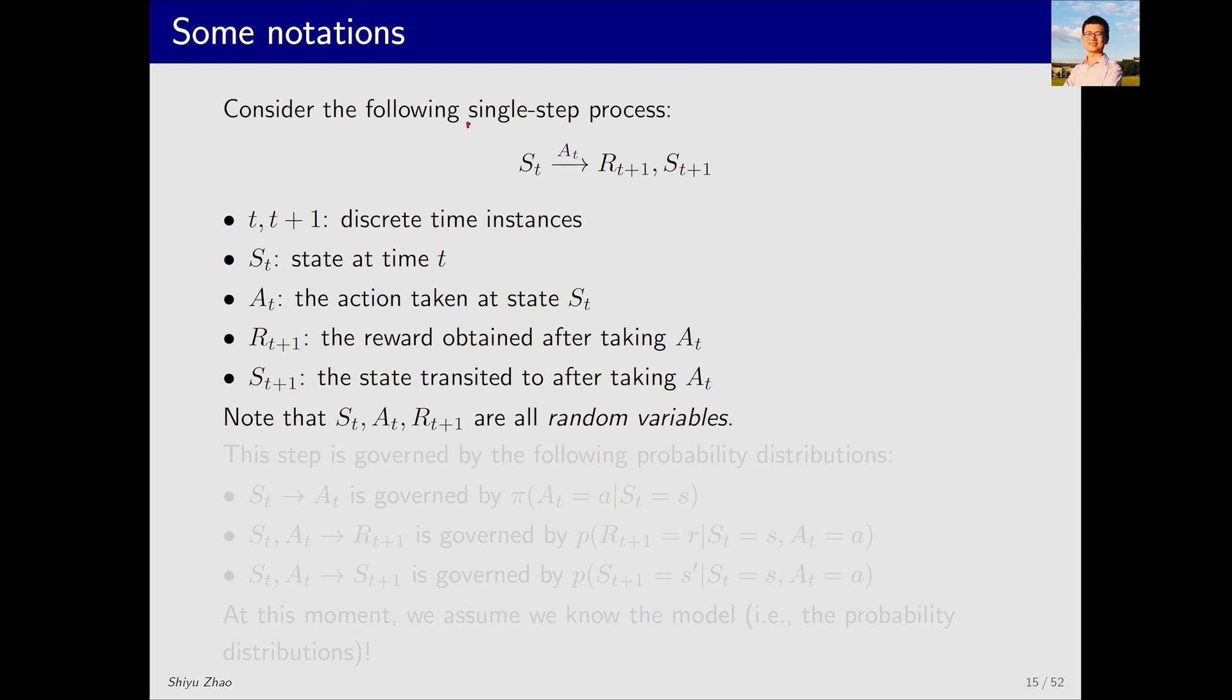To explain state value we must first introduce some symbols. Let's look at this simple single step process. Here s_t represents the current state, while the action taken in this state is denoted as a_t. The reward received is r_{t+1} and the subsequent state is s_{t+1}. The t denotes the current moment and t+1 denotes the next moment. Their specific meanings are described here.